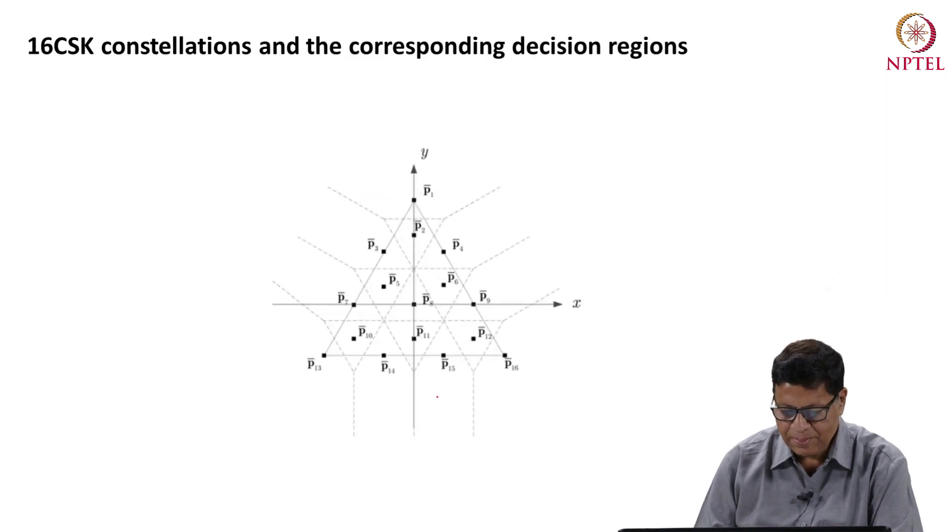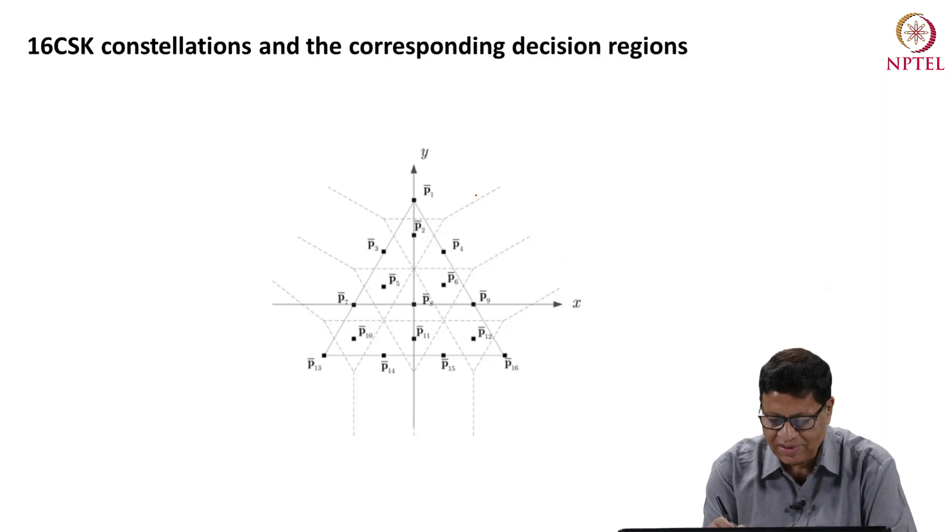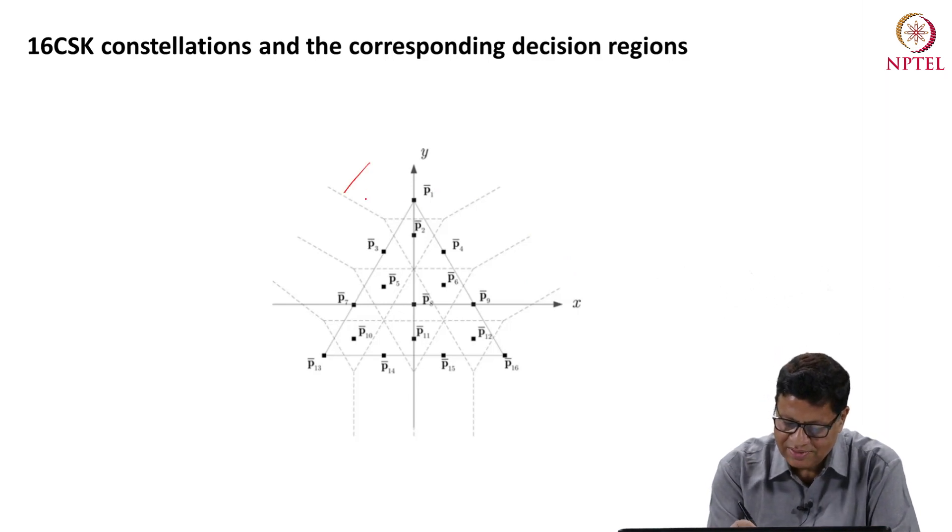And this is an example of a 16 CSK constellation diagram and corresponding decision regions. Actually some of the decision regions are of same shape. So you will get same value of probability error for example, P2, P5, P6. These are of same and then there are P4 and P9 they have different shape. So you need to calculate probability of error for each one of them and then sum them up, take the average.